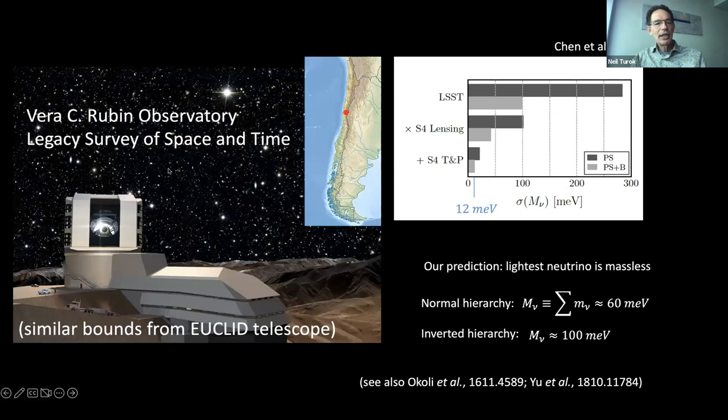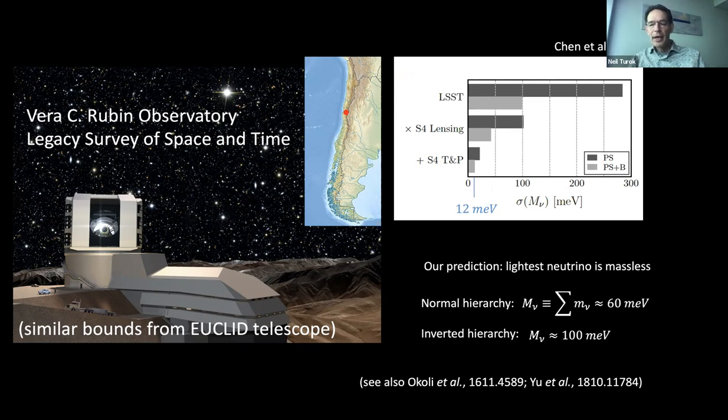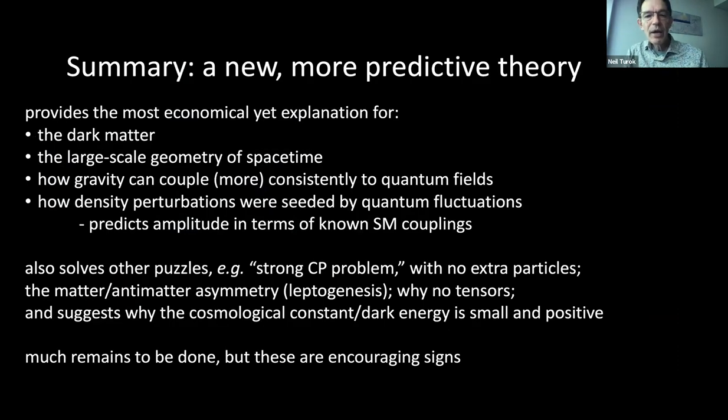So here's the data. We know mass differences. We do not know the absolute zero of the mass scale for the three observed light neutrinos. Here's the very latest data. And they indeed favor the lightest possible value for the lightest neutrino. They favor zero mass for the lightest neutrino. In the next three to five years, this will become very precise. And if the data continues to favor a massless light neutrino, the lightest one being massless, then our theory will be easily, I would say, the most compelling candidate for dark matter. Here is a telescope in Chile, amazing new telescope. The prediction is that the total mass of the light neutrinos is 60 milli electron volts. That's a prediction if the lightest one is massless. And their sensitivity is going to be about 12 milli electron volts. Okay, so we're getting to the level of precision where this will be tested very precisely. Summary, we have a new theory. It's more predictive than the standard version. It provides the most economical yet explanation for the dark matter, the large-scale geometry of the universe, how gravity couples more consistently to quantum fields. And I haven't really talked about this. We can predict the density perturbations we see in the sky from first principles. There are a bunch of other problems which it addresses. A lot remains to be done, but these are encouraging signs. And Nghia Benga.